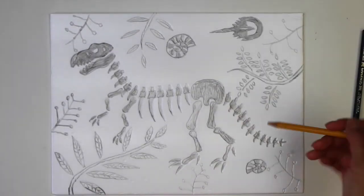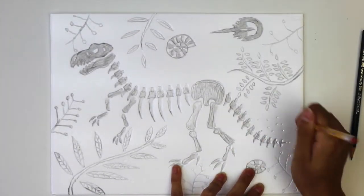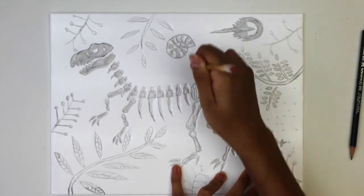I'm filling in the background with more plants. Finally, use the dull pencil to put dots for the sand. You can also use the sharp pencil to put different sizes of dots.